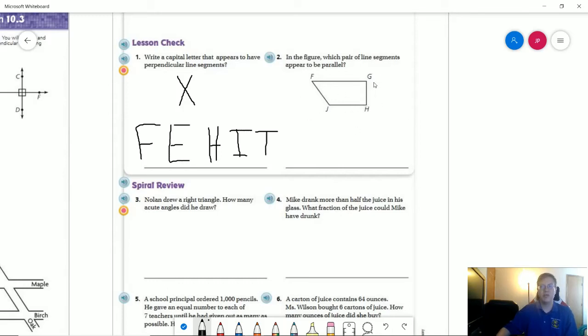For number two, we are worrying about which two lines appear to be parallel. That would be FG and JH. And then we would want to draw, oh, we do not want that part. We want just that. So we don't want to draw the actual thing for the line this time because we are talking about line segments.